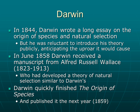In 1844, Darwin wrote a long essay on the origin of species and on natural selection. He knew what an uproar this would cause and was reluctant to introduce his theory publicly. However, in June of 1858, Darwin received a manuscript from someone who had developed a theory similar to his own. He quickly realized that if he didn't publish his work he wouldn't be able to take credit for all his research. So he quickly finished the book he called The Origin of Species and published it in 1859.